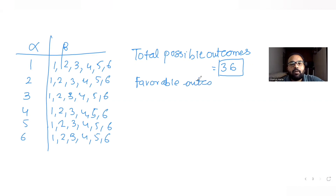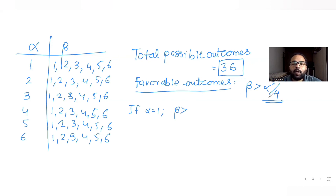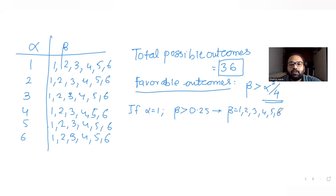Our favorable outcomes must satisfy the condition β > α² / 4. If alpha is 1, beta must be greater than 1/4, which is 0.25. All six outcomes of beta (1 through 6) satisfy this, so there are 6 favorable outcomes when alpha = 1.